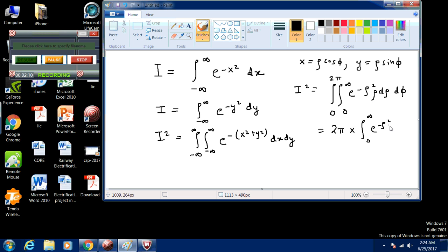There will be a rho here, rho d rho. Now just see in the variables. Take rho squared as t. You will get two pi into half. Zero to infinity e raised to the power minus t, dt. That just comes out to be simply as pi.